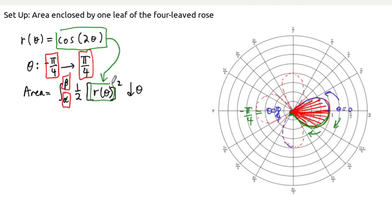That whole thing gets squared, and so what we end up with is that our area is equal to 1/2 times the integral from -π/4 to π/4 of our integrand, which is now cos²(2θ) dθ.